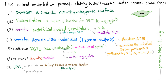Heparin sulfate stimulates antithrombin-3 and neutralizes activated serine proteases such as prothrombin and factors 7, 9, 10, 11, and 12. The endothelium also synthesizes prostaglandin I2, also known as prostacyclin, which keeps the blood cycling — meaning flowing — by vasodilating the vessel and decreasing platelet aggregation.